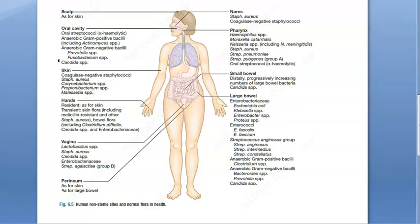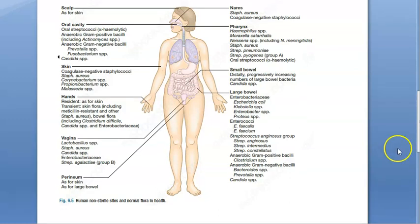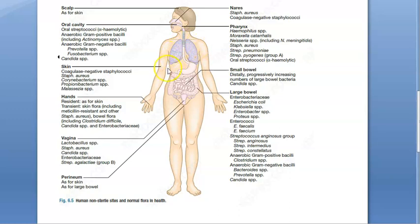In the heart nothing is there, and in the lungs nothing is there. Normal flora only extends up to the pharynx. The trachea, lungs, and beyond — nothing is listed there.